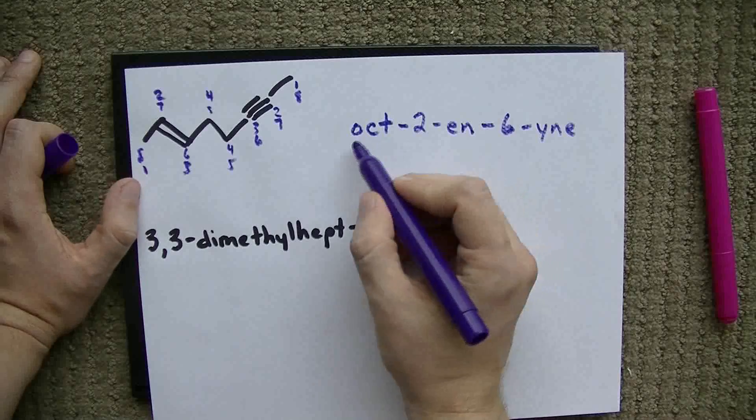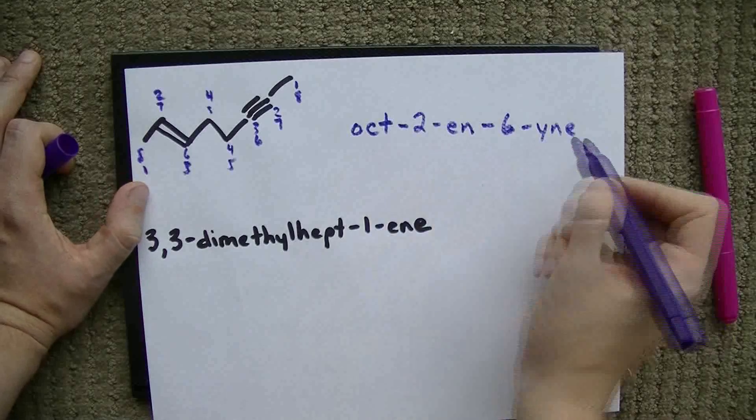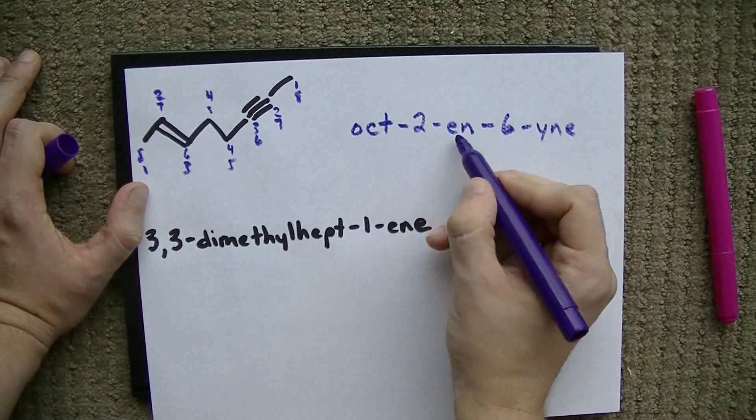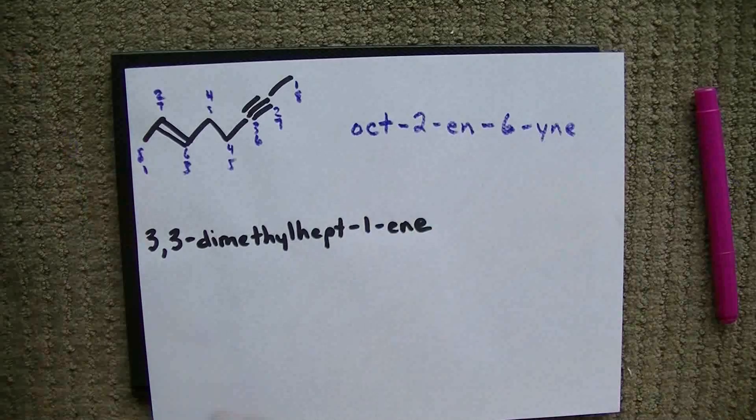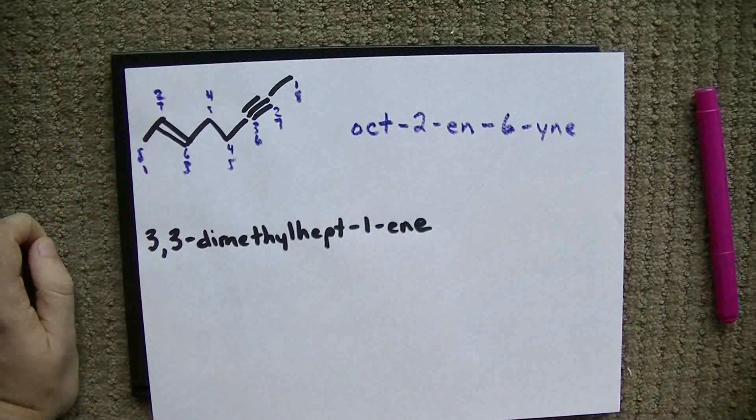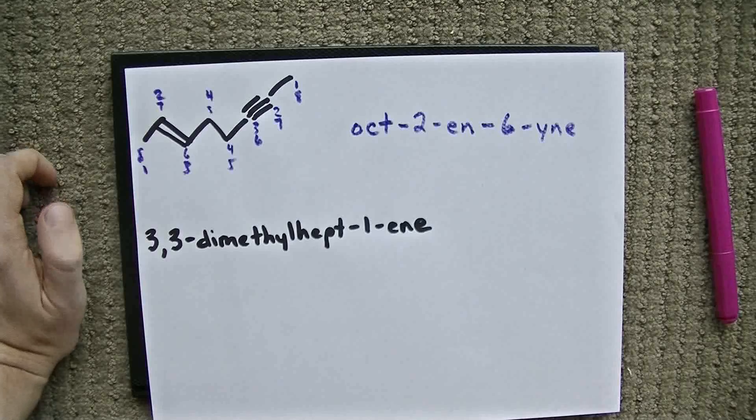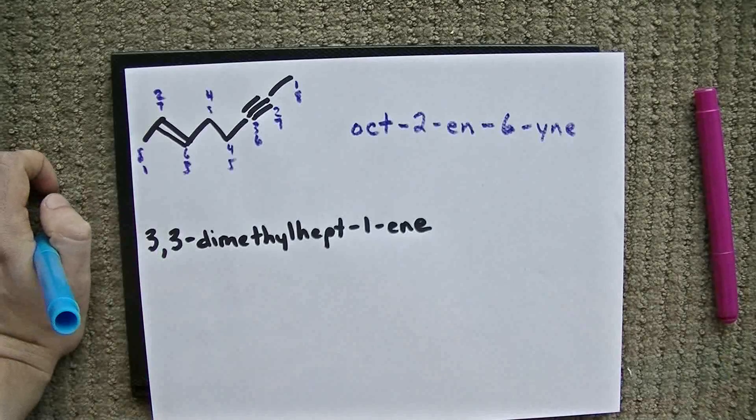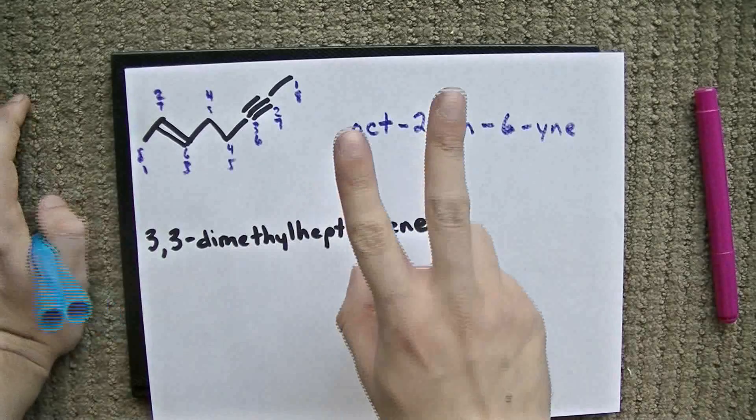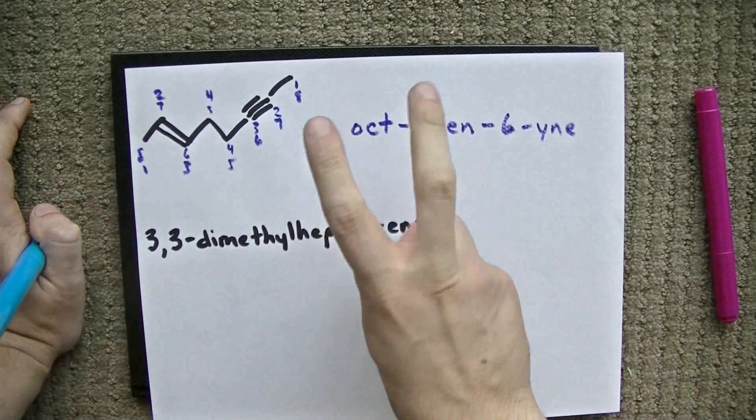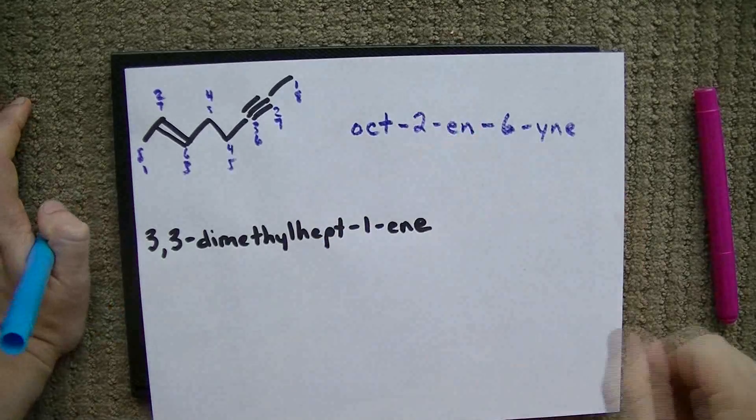This shows us we have an 8-carbon chain with a double bond and a triple bond. The double bond starts at carbon 2. The triple bond starts at carbon 6. Now, for those of you who are even more advanced than that, you may be asked to tell people whether the molecule is cis or trans. I'm going to make a separate video for that.